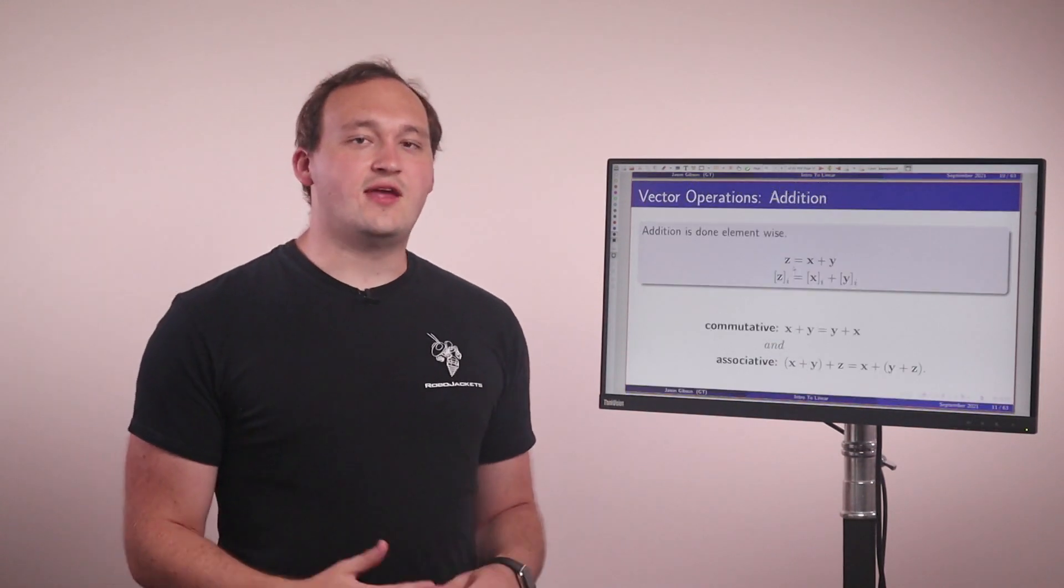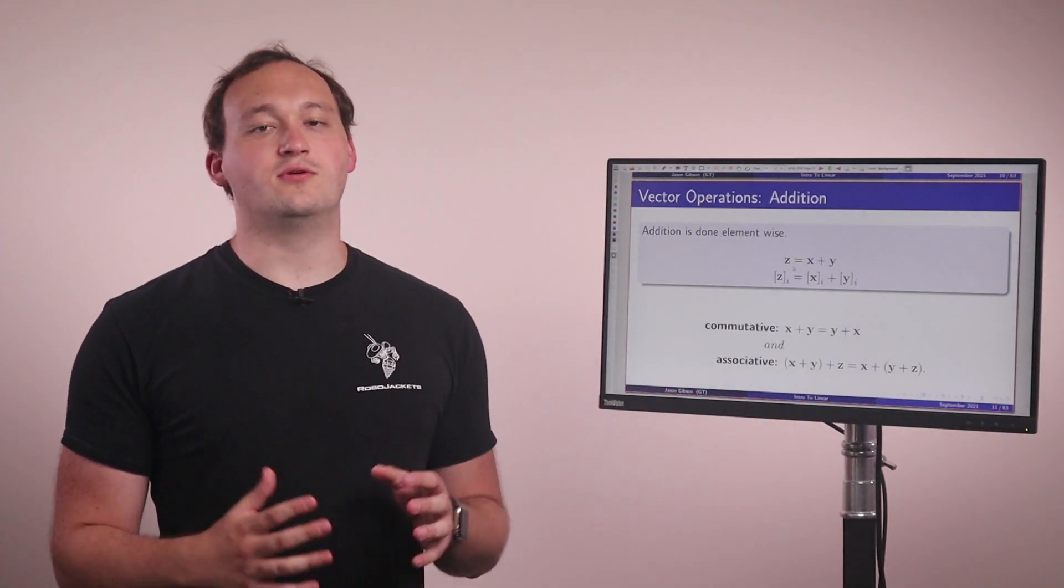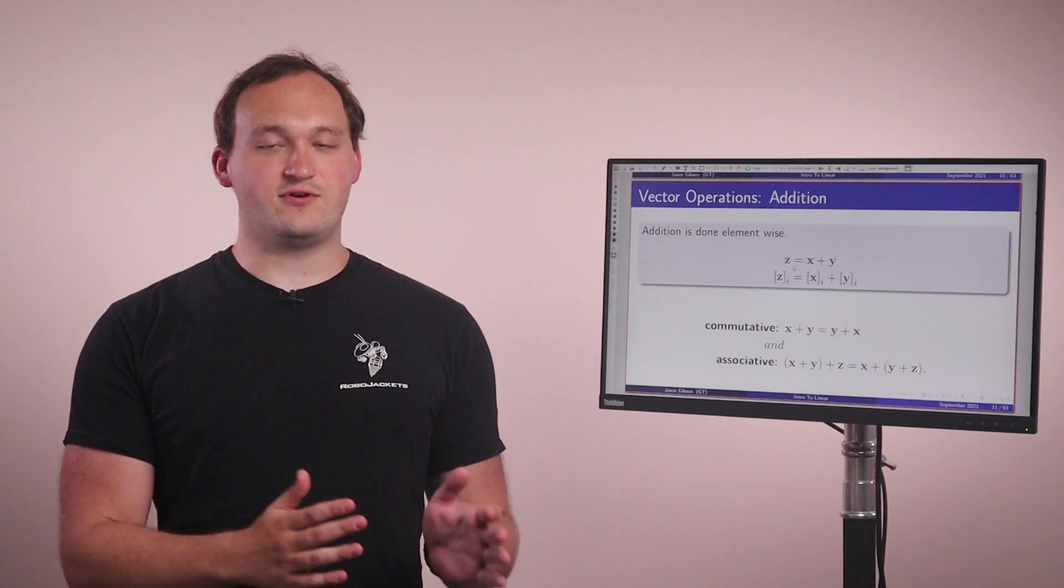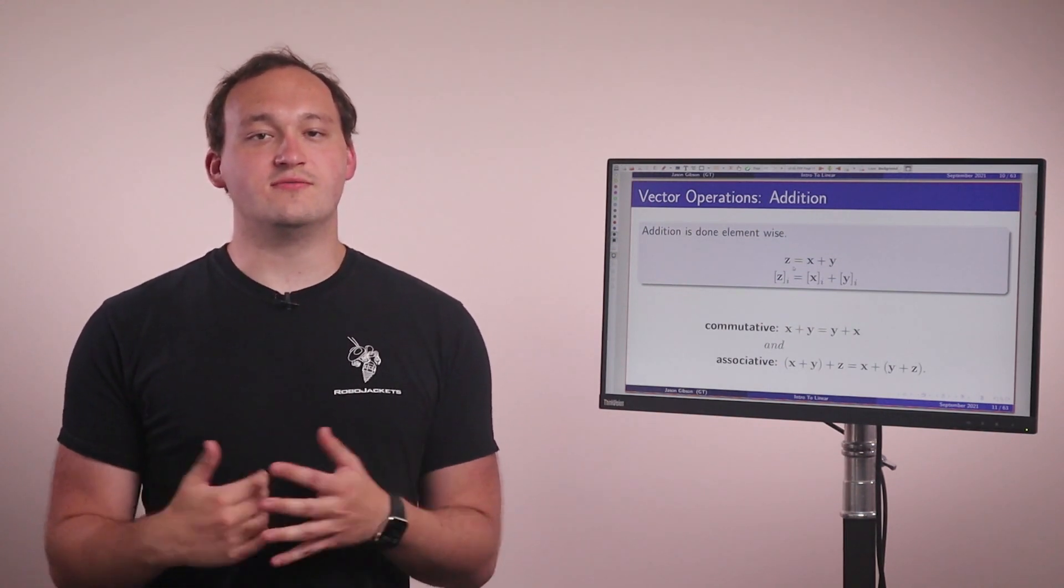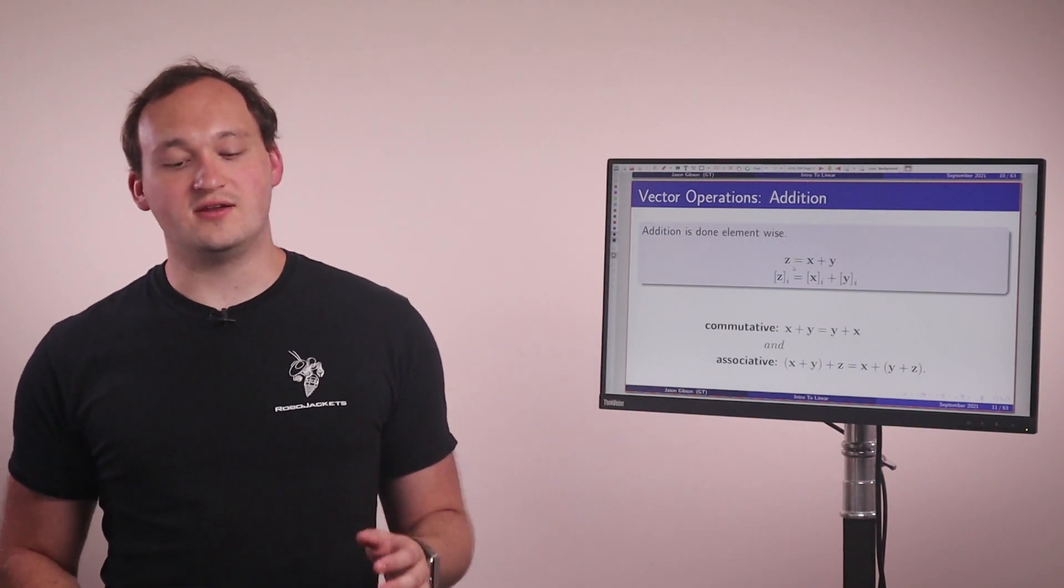The next thing we have is how to add two vectors together. So we can add two vectors together doing it element-wise. So the resulting vector z is equal to at every index of the vector x and y, we just sum the two values together. And vector addition is commutative and associative.